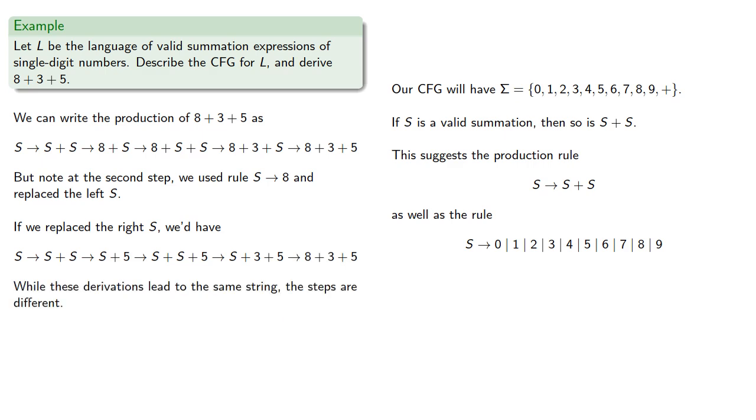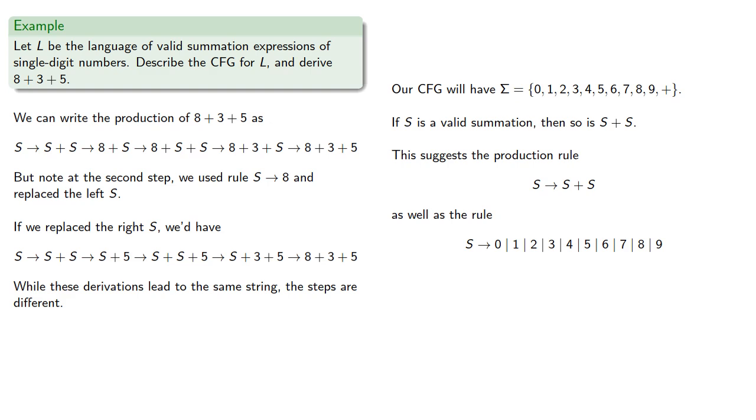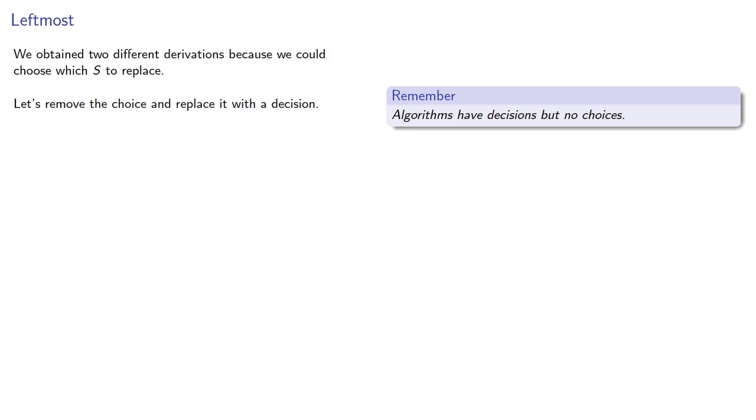While these derivations lead to the same string, the steps are different. We obtain two different derivations because we could choose which S to replace. But remember, algorithms have decisions but no choices. While freedom of choice is important for political systems, it's not good for algorithms. So let's remove our choice and replace it with a decision.